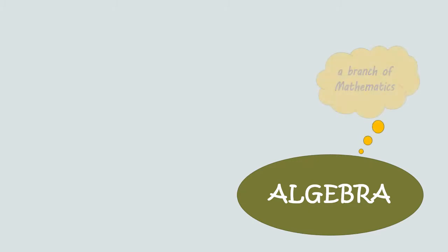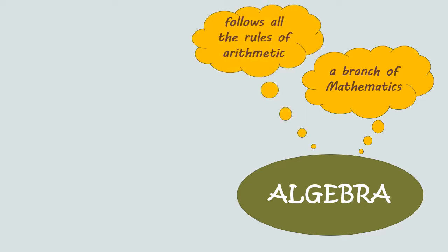Algebra is a branch of mathematics that deals with numbers and symbols. It is very similar to arithmetic because it follows all the rules of arithmetic and is also based on the four basic operations: addition, subtraction, multiplication, and division.